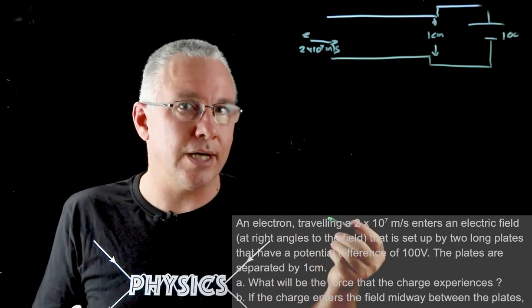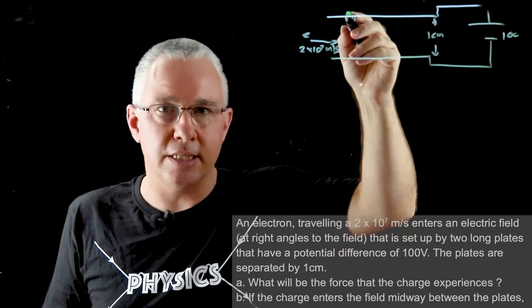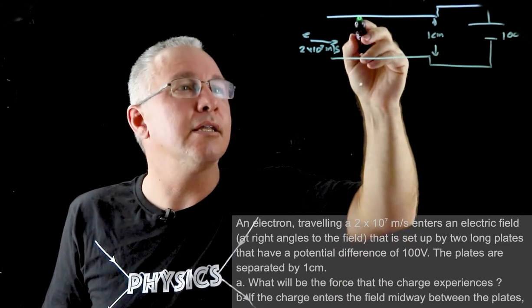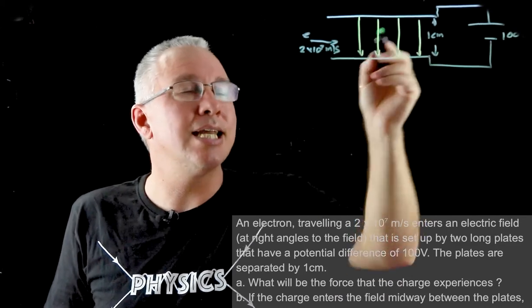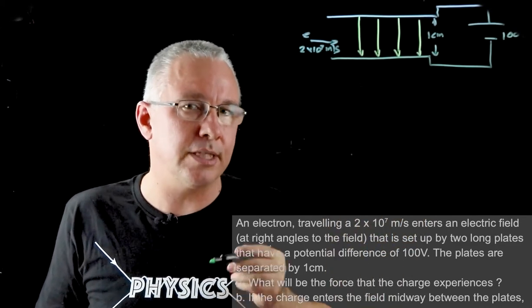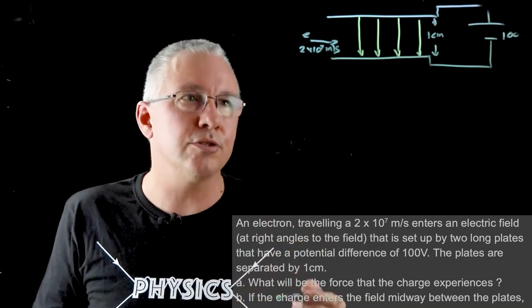So it's helpful then to draw our electric field as we go. Since this is the positive plate and this is the negative plate over here, our electric field is going to be in the downward direction like this and it's a uniform electric field. That's important because that tells us that the force that the charge experiences is a constant force.